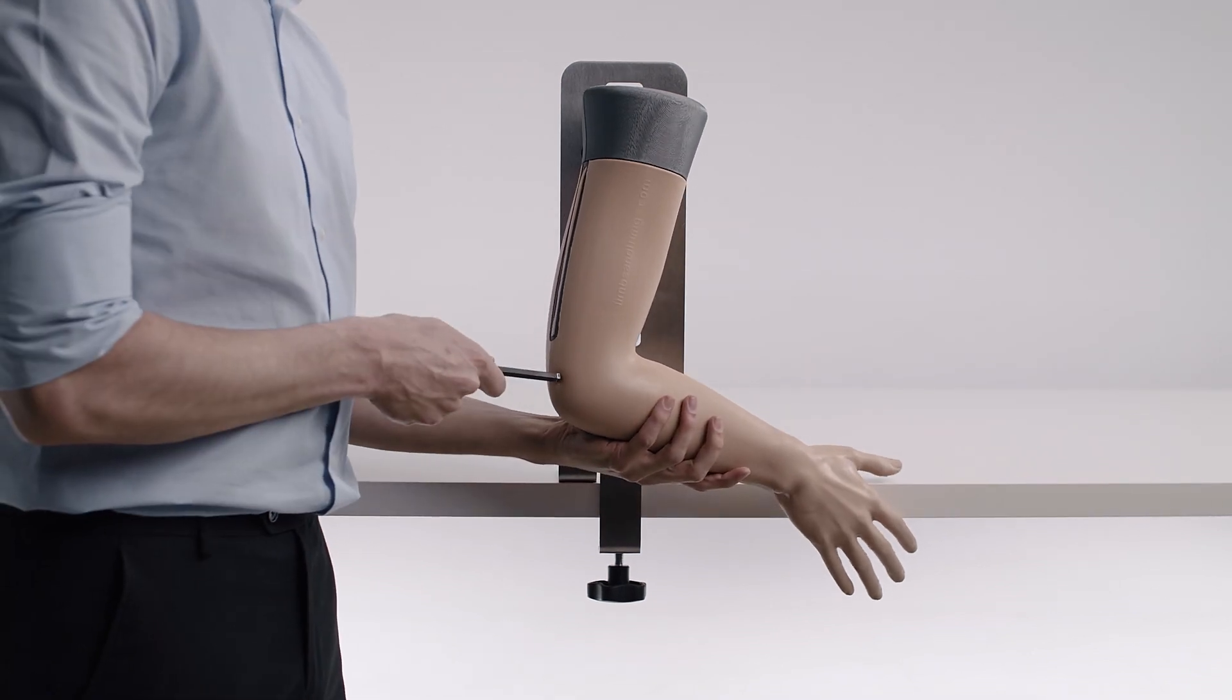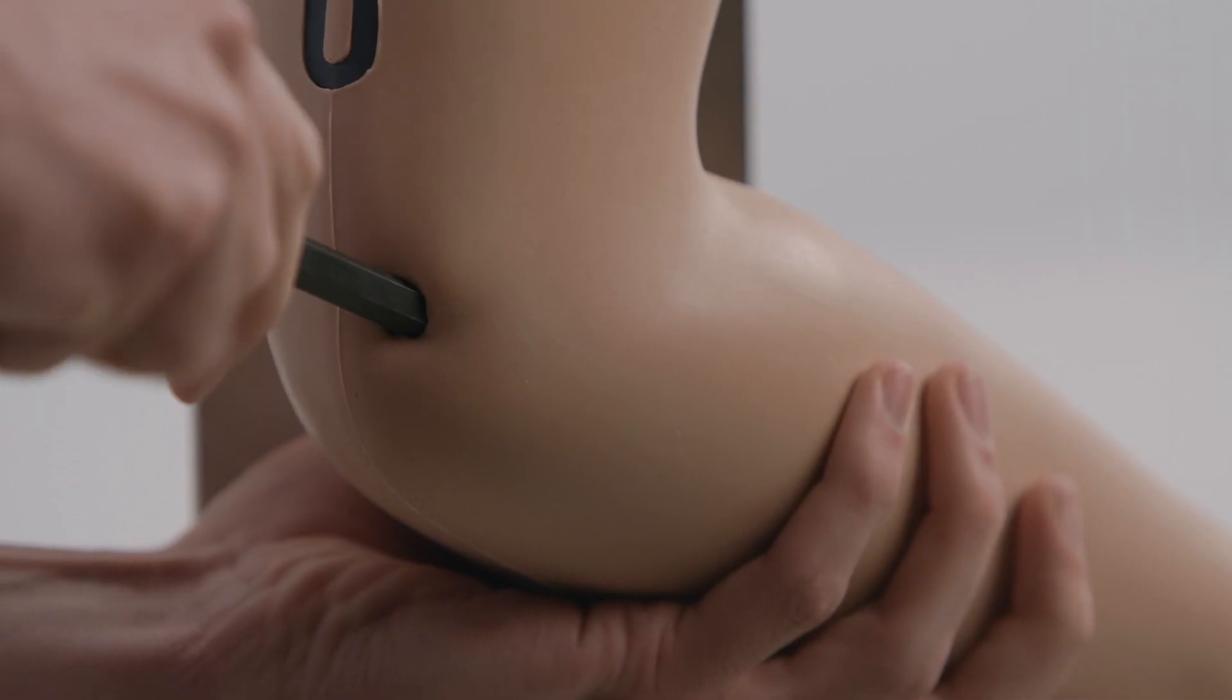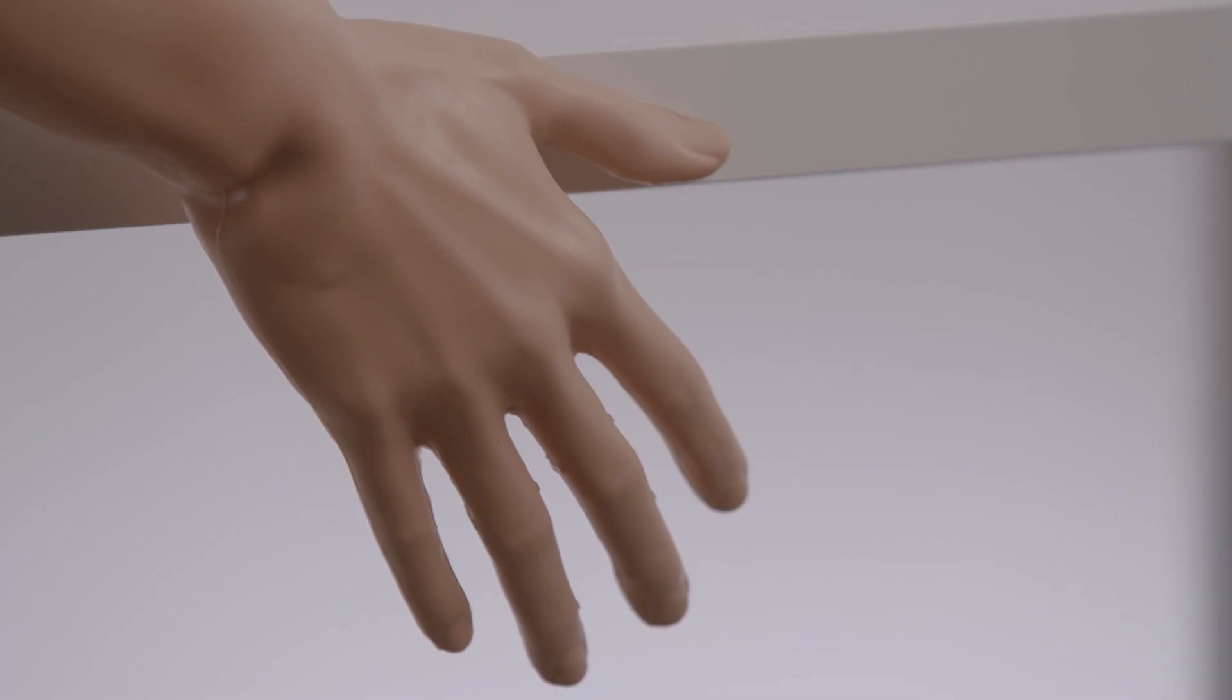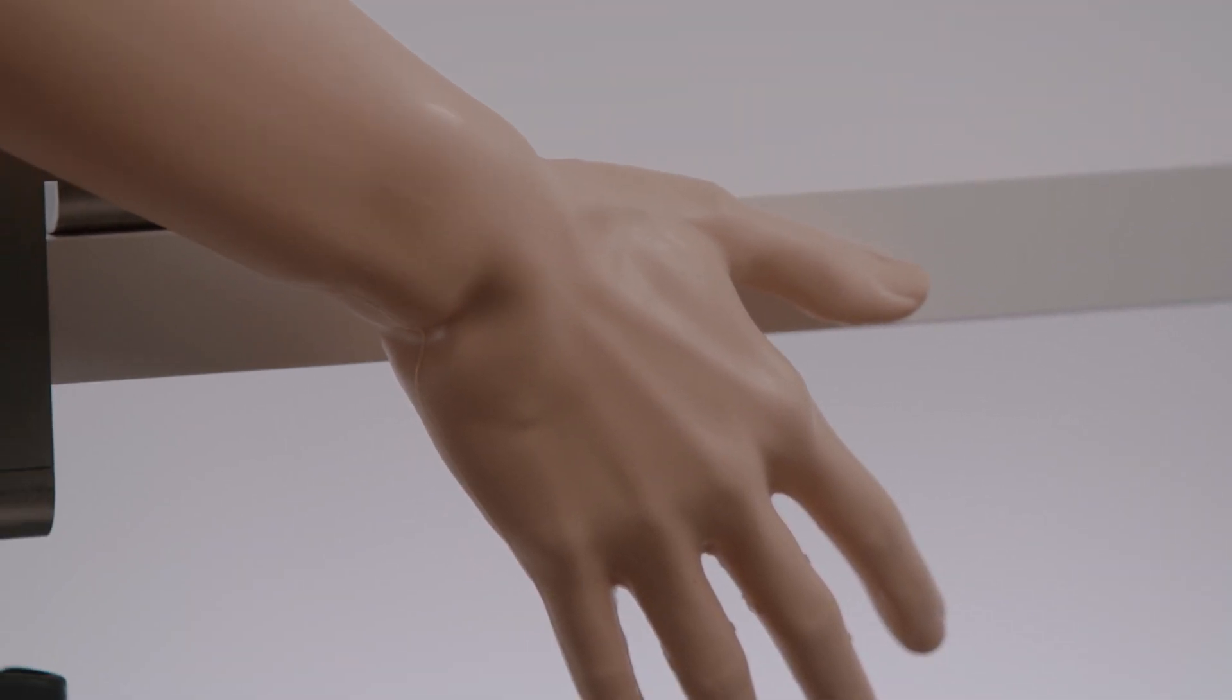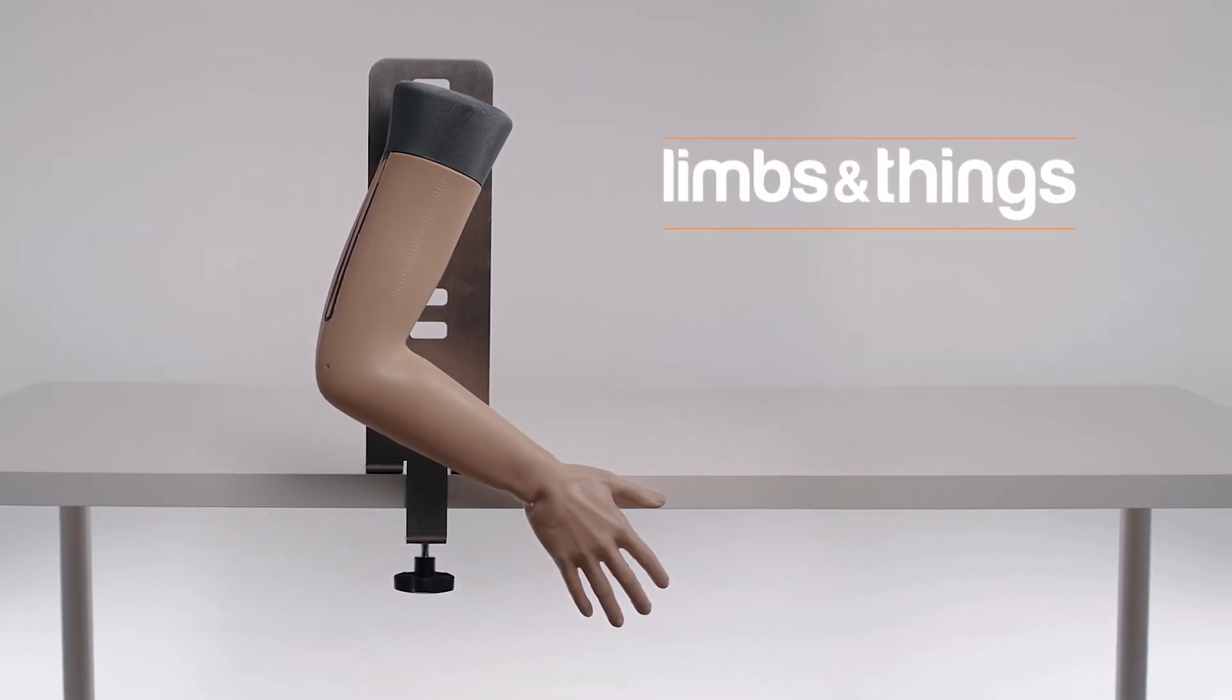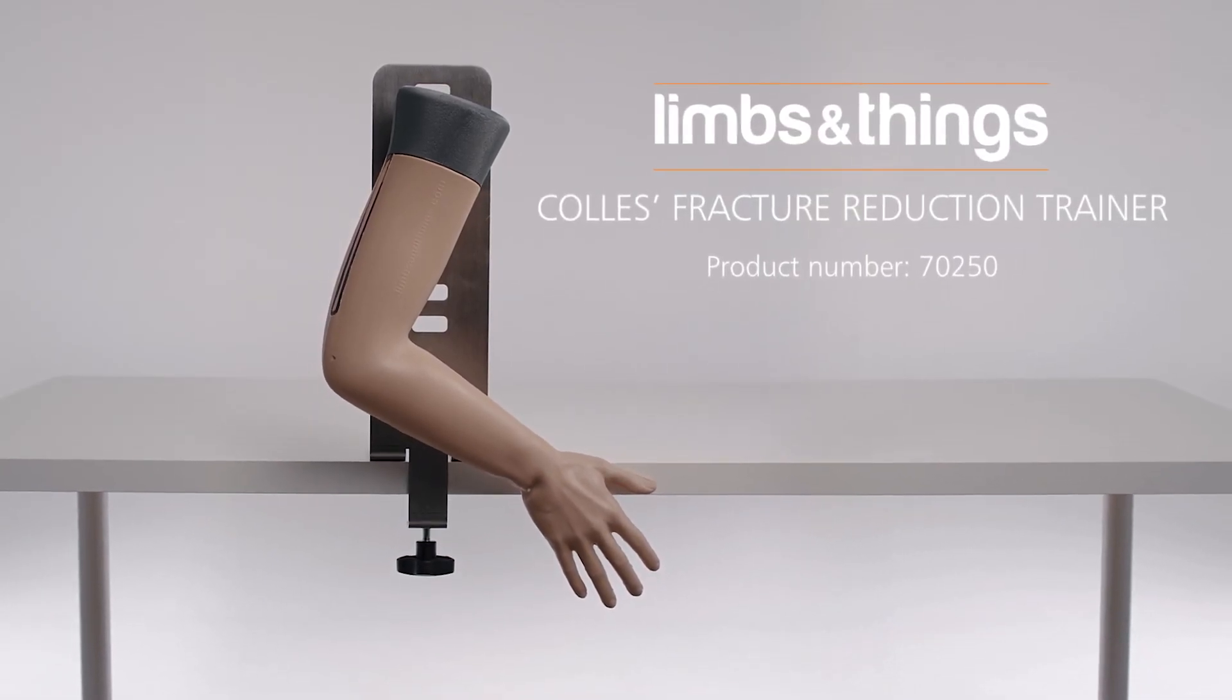The stand allows for individual training, whilst the adjustable tension screw is used for progressive levels of difficulty. Collie's fracture reduction trainer is the ideal tool for performing the fundamental skill of reducing distal radius fractures.